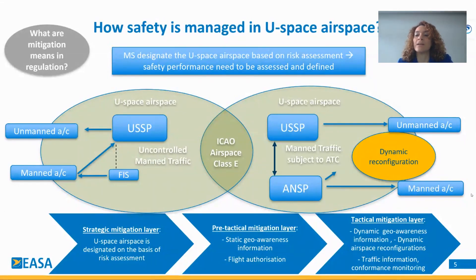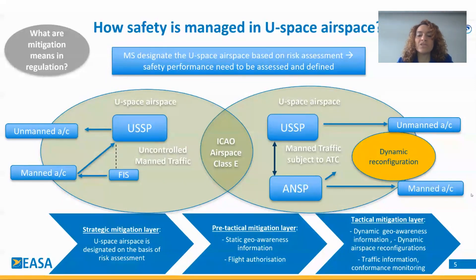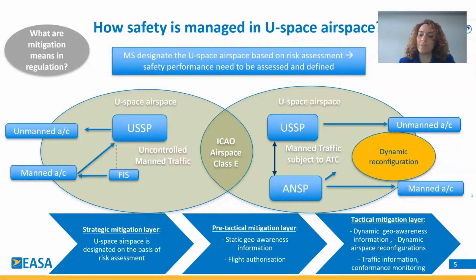In the tactical mitigation layer, we have the dynamic geo-awareness information derived from dynamic airspace reconfiguration, the traffic information, and the conformance monitoring whenever it is implemented. In that way, we mitigate all the safety risks in all U-Space airspace implementations.